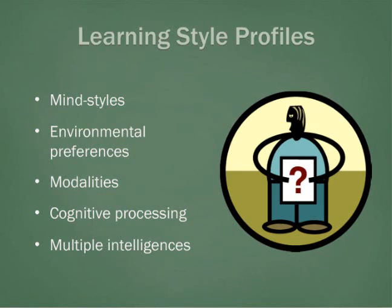The first question we need to answer is: how do you communicate what you know? Other categories include environmental preferences — how do you concentrate — modalities — how do you remember — cognitive processing — how do you interact with information — multiple intelligences — how do you show you are smart? Let's begin and see what answers you get.